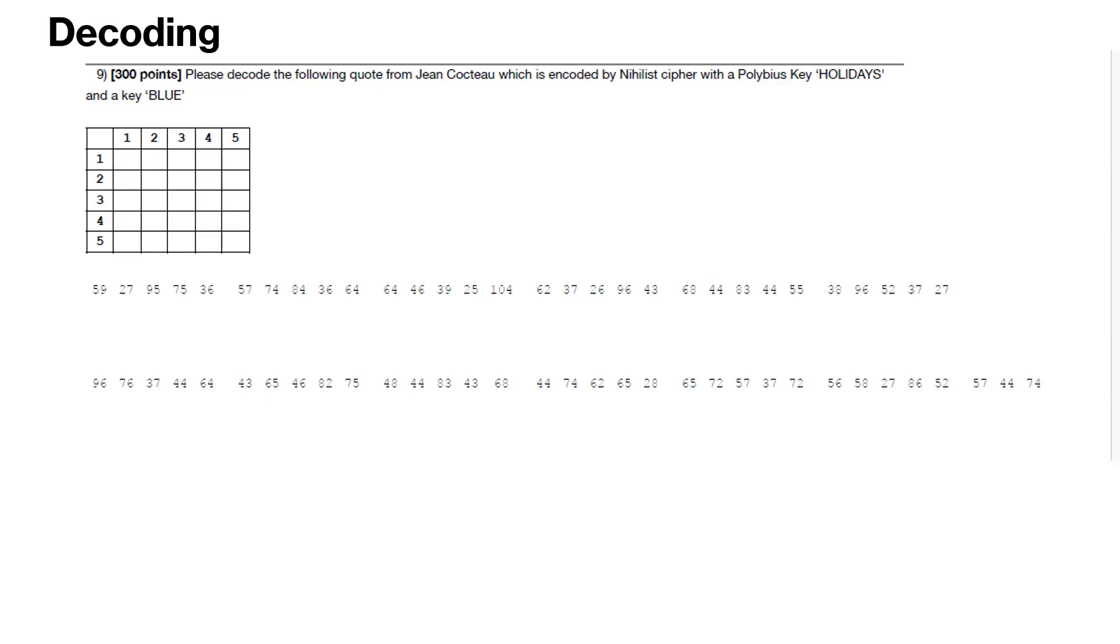So let's first talk about the steps to decode Nihilist cipher. There are five steps. So we'll go through those steps. The first step is to fill this five-by-five grid using the polybius key. That will give us the numerical mapping for each alphabet.